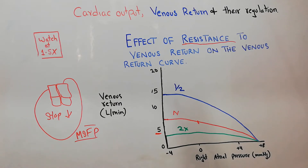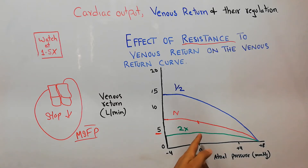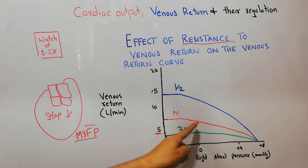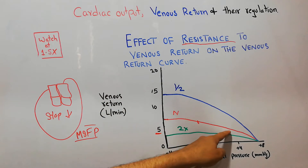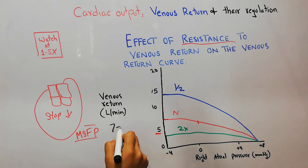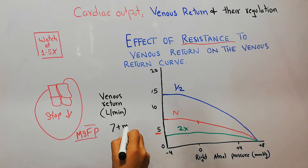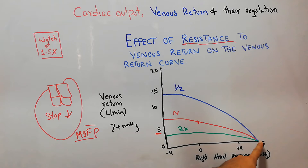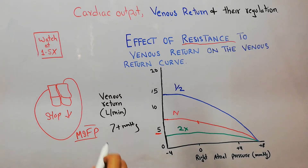Now as the right atrial pressure starts increasing, we see that there is a decrease in the venous return. This venous return starts decreasing, and when the right atrial pressure reaches the level of 7 mmHg, the venous return has touched zero — meaning there is no venous return.